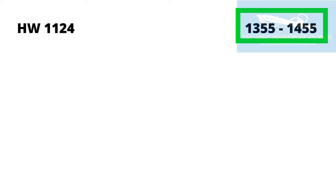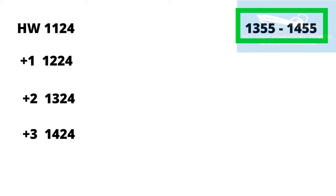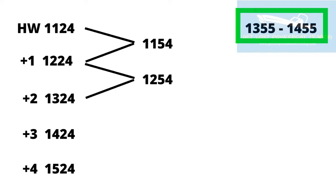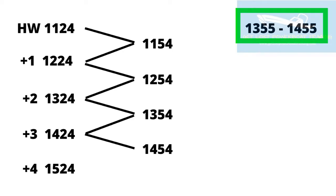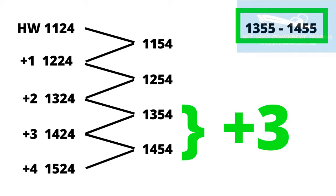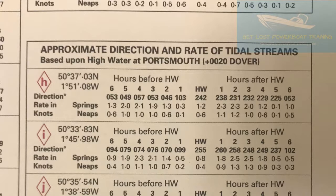We know our journey time was 13:55 to 14:55, and we know that high water at the standard port of Portsmouth was 11:24. With that information we can fill out a tidal ladder and work out what hour relative to high water 13:55 to 14:55 is. First we fill out a column showing the hours after high water, because 13:55 to 14:55 occurs after 11:24 in the morning. Then, taking our time and being accurate, we fill out another column indicating the half hours in between those tidal hours. In doing this we can see that 5 to 2 to 5 to 3 was high water plus 3 hours, giving us the information to refer back to the tidal diamond table and read off the values to plot on the chart.